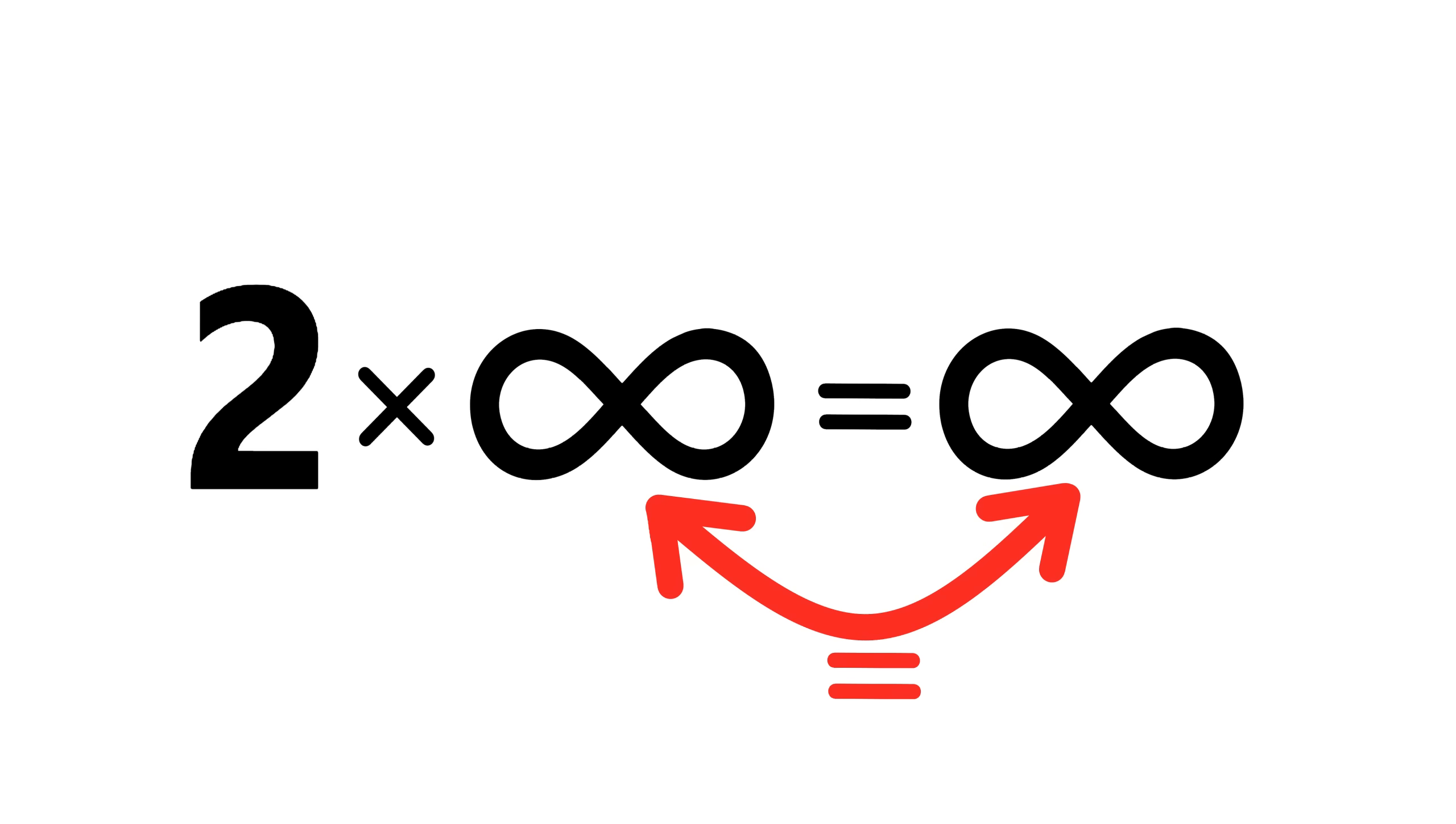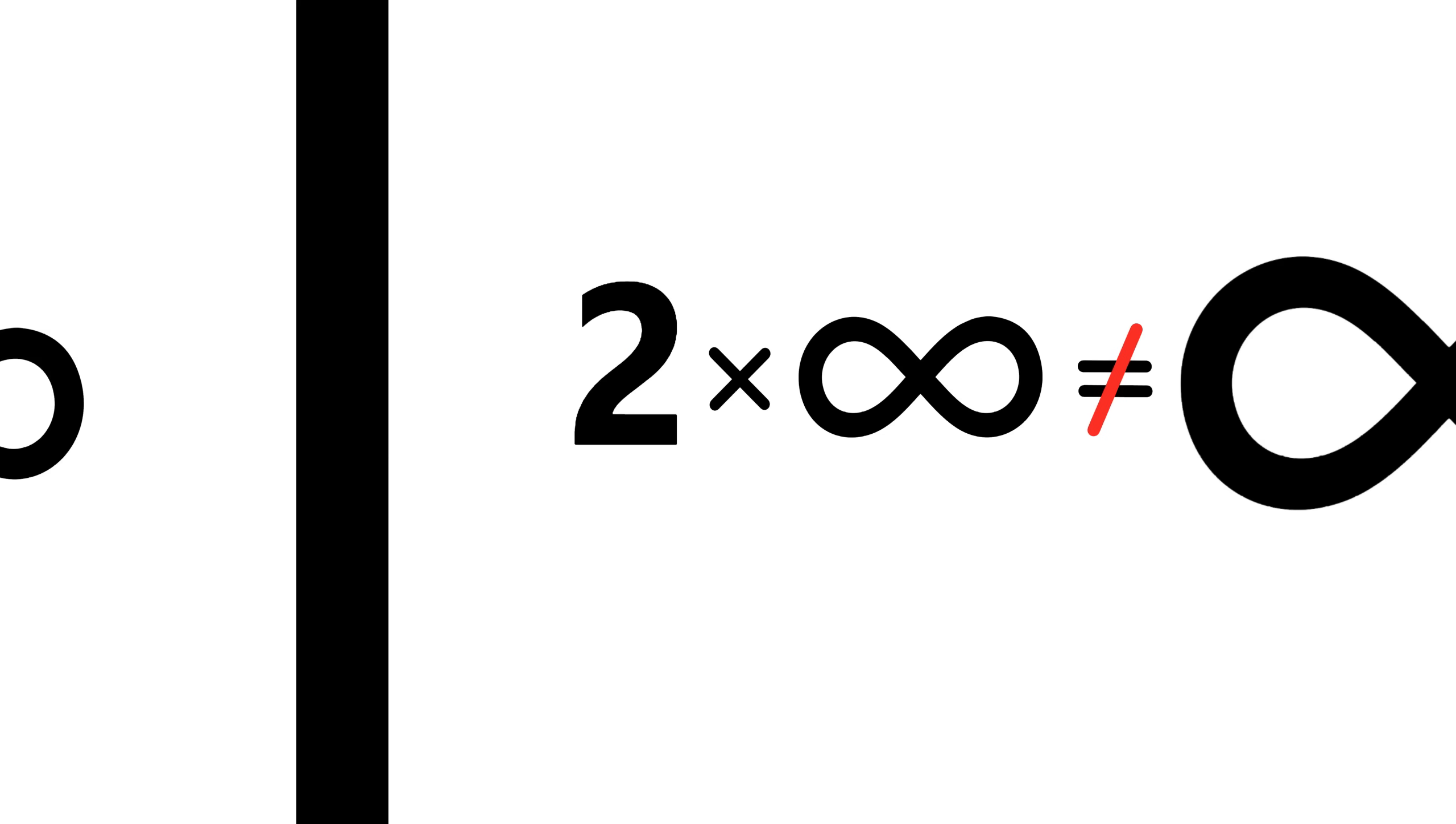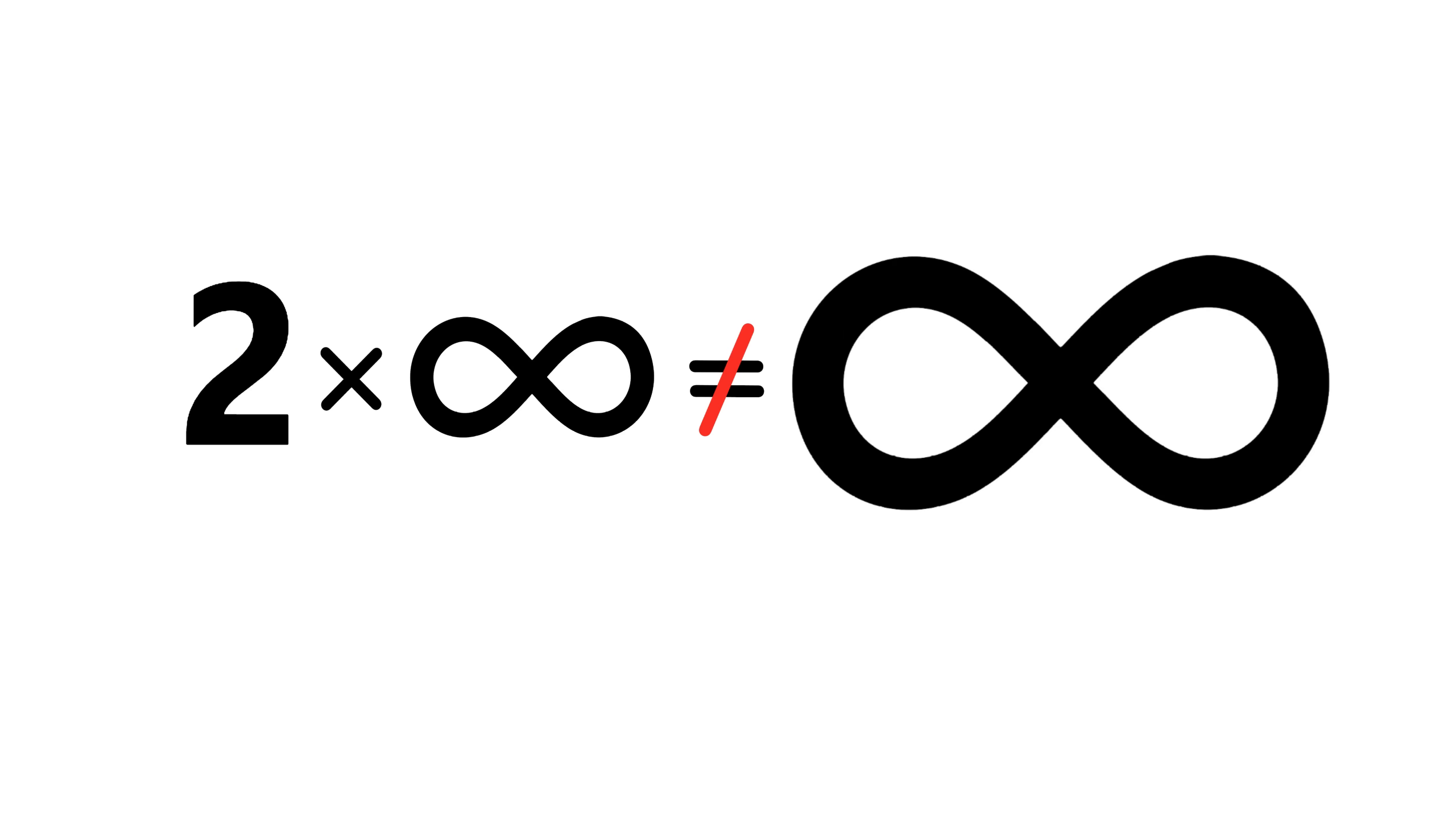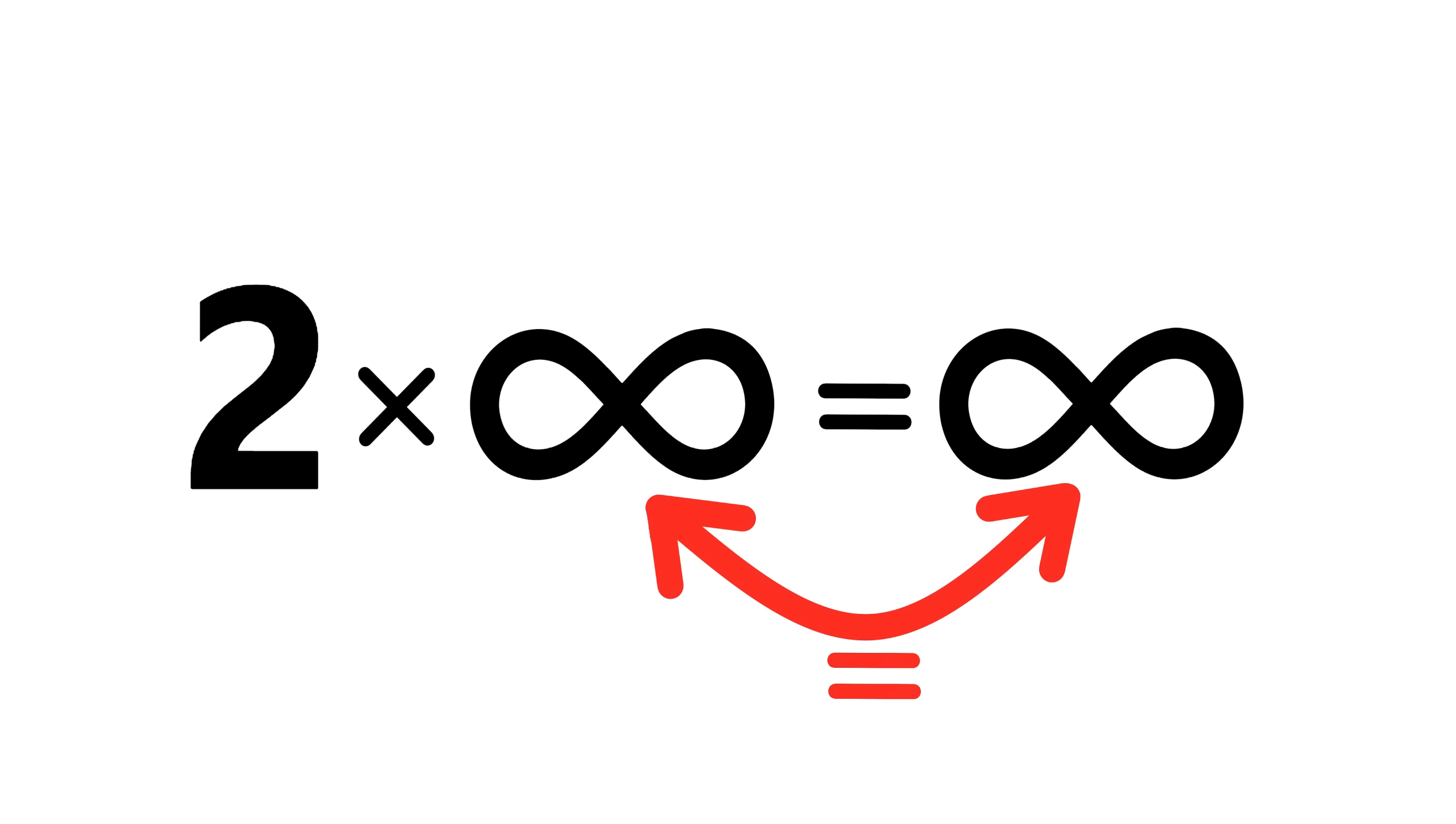Or going the other way, if we start off with an infinity and double it, we get an infinity exactly the same size as the one we started out with. So infinity times two is not a bigger infinity, it is the exact same infinity. So that answers the question I started off this video with.